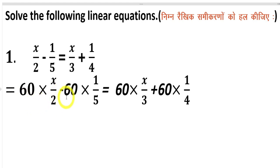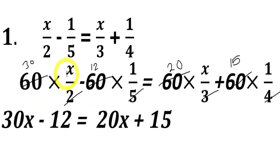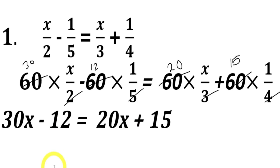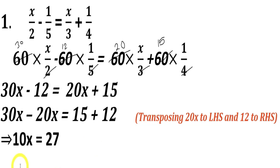Multiplying both sides by 60: 60 × x/2 minus 60 × 1/5 equals 60 × x/3 plus 60 × 1/4. यानी हर term को 60 से multiply किया। अब 2 से 60 divide होगा 30 time, 5 से 60 divide होगा 12 time, 3 से 60 divide होगा 20 time, और 4 से 60 divide होगा 15 time। अब हमारे पास बचा: 30x minus 12 is equal to 20x plus 15. Transposing 20x to left and 12 to right: 30x minus 20x equals 15 plus 12, so 10x is equal to 27.